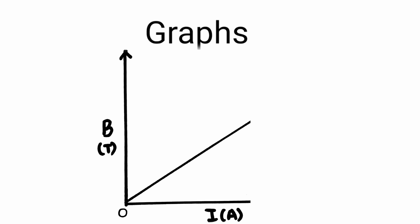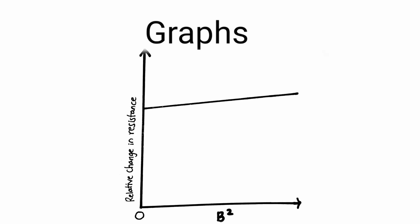So two graphs will be obtained. The first will be the B versus I graph and the second will be the change in resistance versus the magnetic field graph.